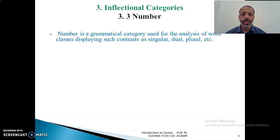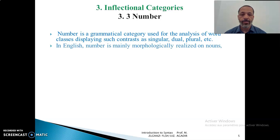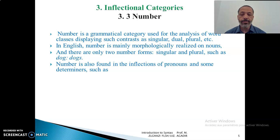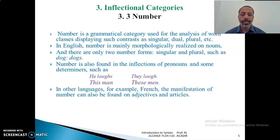Number is a grammatical category used for the analysis of word classes displaying such contrasts as singular, dual, and plural. When we use the term number in English, it is realized on nouns, not on adjectives — unlike French, in which number is realized on nouns, adjectives, and also verbs. In English there are only two number forms: the singular and the plural, such as dog/dogs, student/students, and so on. Number is also found in the inflections of pronouns and some determiners such as he loves / they love, this man / these men.